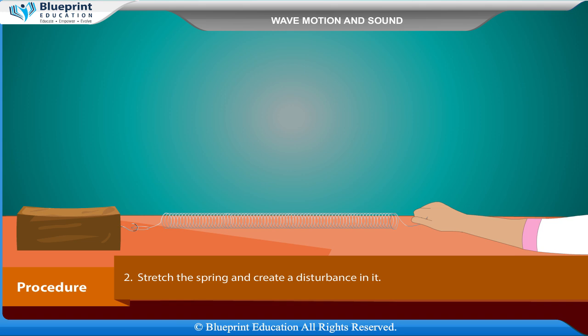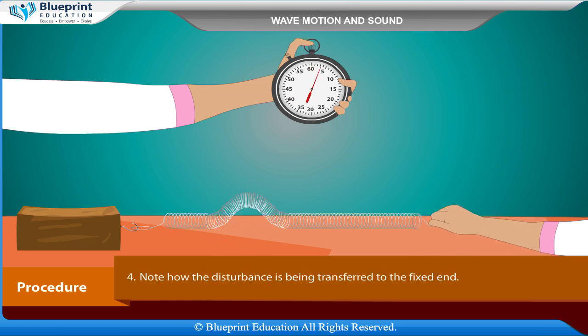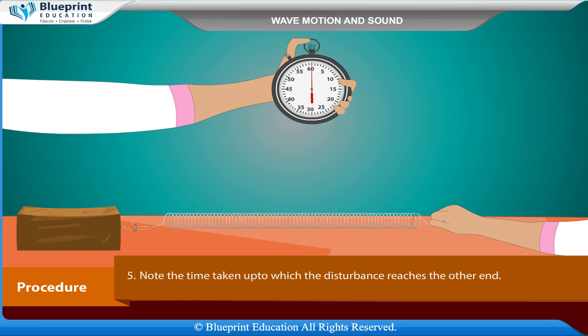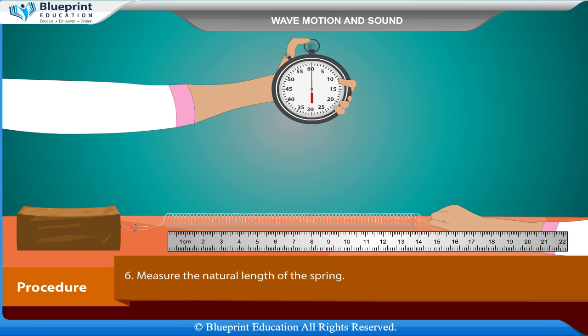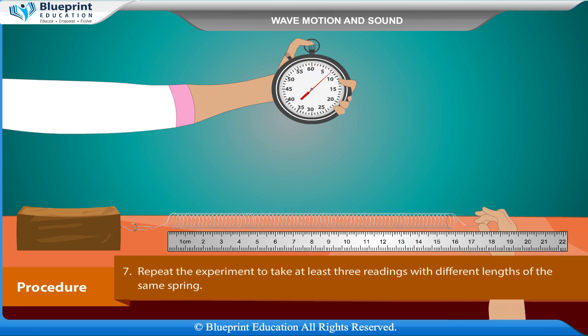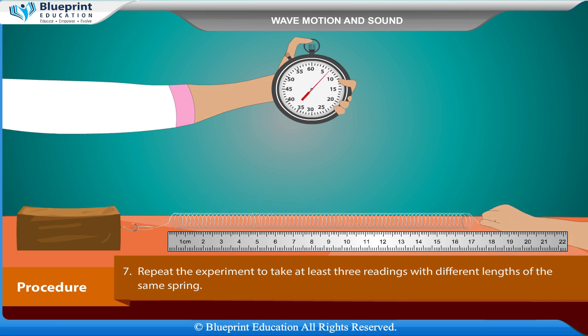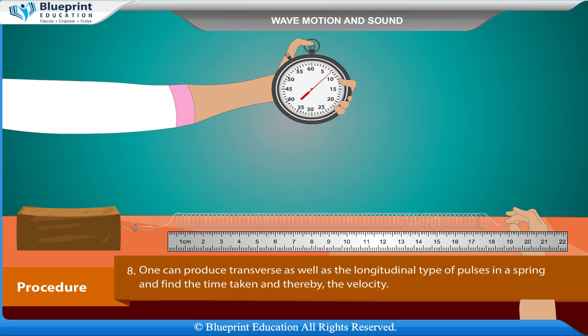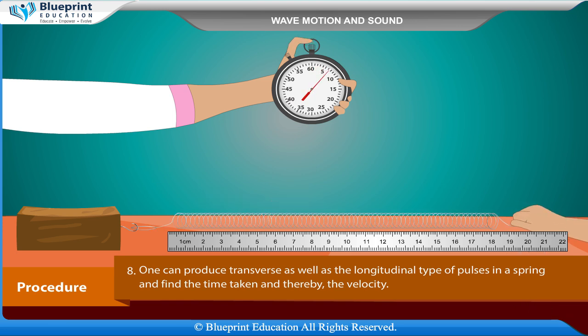Procedure: Tie a spring of negligible mass to a rigid support. Stretch the spring and create a disturbance in it; simultaneously switch on the stopwatch. Note how the disturbance is being transferred to the fixed end. Note the time taken up to which the disturbance reaches the other end. Measure the natural length of the spring. Repeat the experiment to take at least three readings with different lengths of the same spring. One can produce transverse as well as longitudinal types of pulses in a spring, and find the time taken and thereby the velocity.